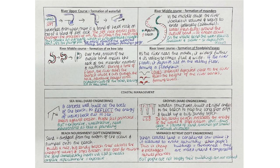In the lower course, you've got levees and floodplains. Every time the river floods, it deposits a layer of silt onto the valley, forming a flat floodplain either side of the river. Levees form where coarse material is deposited close to the river, raising the height of the river banks over time.